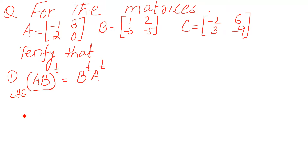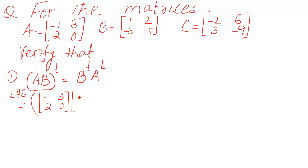I will show it here. We will start from the left hand side. First is the parenthesis, so we write the parenthesis, then A. What is A? A is minus 1 — these are the elements of A — and then we write down the B matrix. The elements of B matrix are 1, 2, negative 3, and negative 5. Then close the parenthesis, and then transpose — do not forget this transpose.